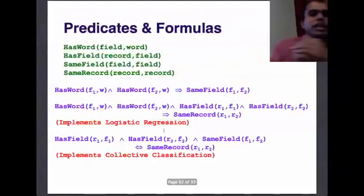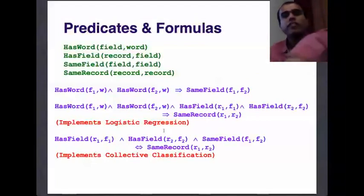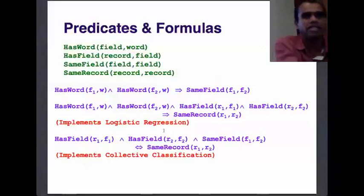But you can do more interesting things. You can say that if record 1 has field 1, record 2 has field 2, and if fields F1 and F2 are the same—what you are saying is authors match—then the corresponding records match. If the authors in two bib entries match, then the corresponding records match and vice versa. If the records match, then the corresponding authors match. Note that this is a two-way implication but you will typically learn different weights. Which weight do you expect to be higher?